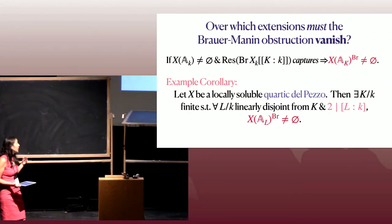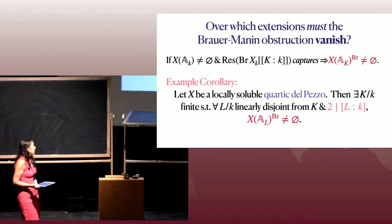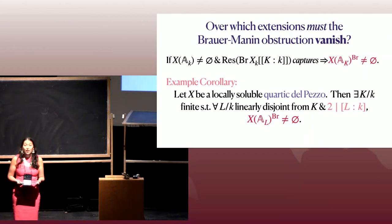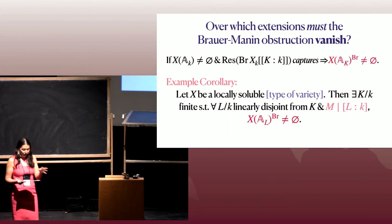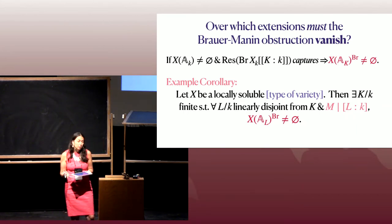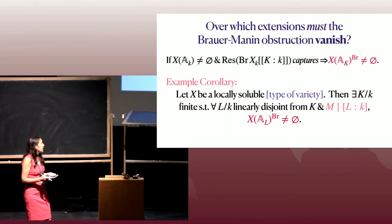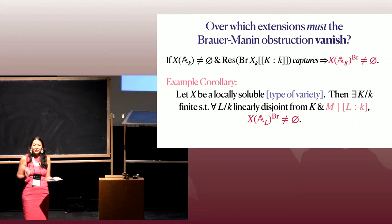Another result in this direction: for a locally soluble quartic del Pezzo surface, from the classification of Brauer groups we know the Brauer quotient is completely 2-torsion. So again, away from a fixed finite extension, if L over K is linearly disjoint from it, you get a non-empty Brauer set for every even-degree extension. For certain types of varieties — often when the Picard group is torsion-free, the Brauer group is completely algebraic, and either the m-torsion is known to generate the Brauer quotient or you have some classification result — you can assemble results from the literature to prove a statement like this.